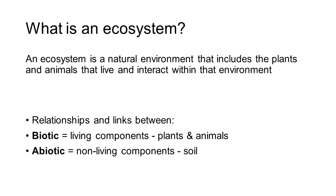So what actually is an ecosystem? An ecosystem is a natural environment that includes the plants and animals that live and interact within that environment. So we're looking at those links and relationships between biotic and abiotic.